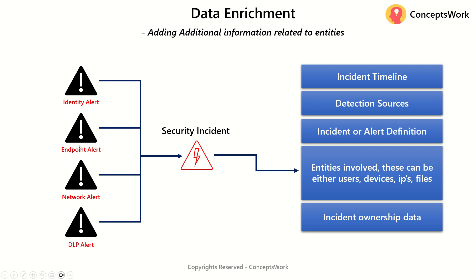Imagine a scenario where you are getting alerts from multiple solutions, and with effective data correlation you combine them into an incident. In a typical SIEM solution, when it comes to a security incident console, there are five sets of common information. The very first is incident timeline — when exactly everything started — then detection sources, the list of solutions on behalf of which the incident is created.